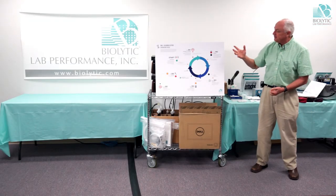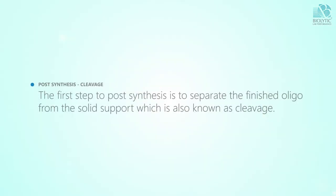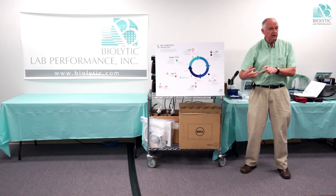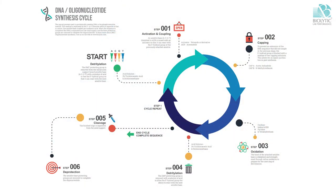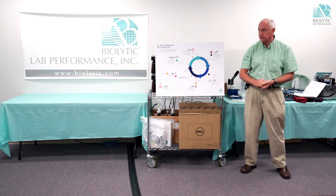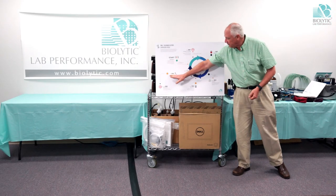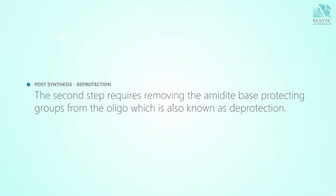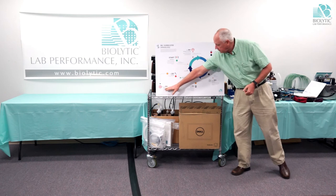Once synthesis is complete, you don't yet have an oligo in a condition that can be used in a biological way. You have to cleave or remove the oligo from the solid support — it's still attached to that solid material and must be removed, typically called cleaving, done with a strong base. Ammonium hydroxide has traditionally been used; AMA — a mixture of ammonium hydroxide and methylamine — is another option, as is straight methylamine. After cleaving, you also have to remove side chain protecting groups from other points in the molecule.